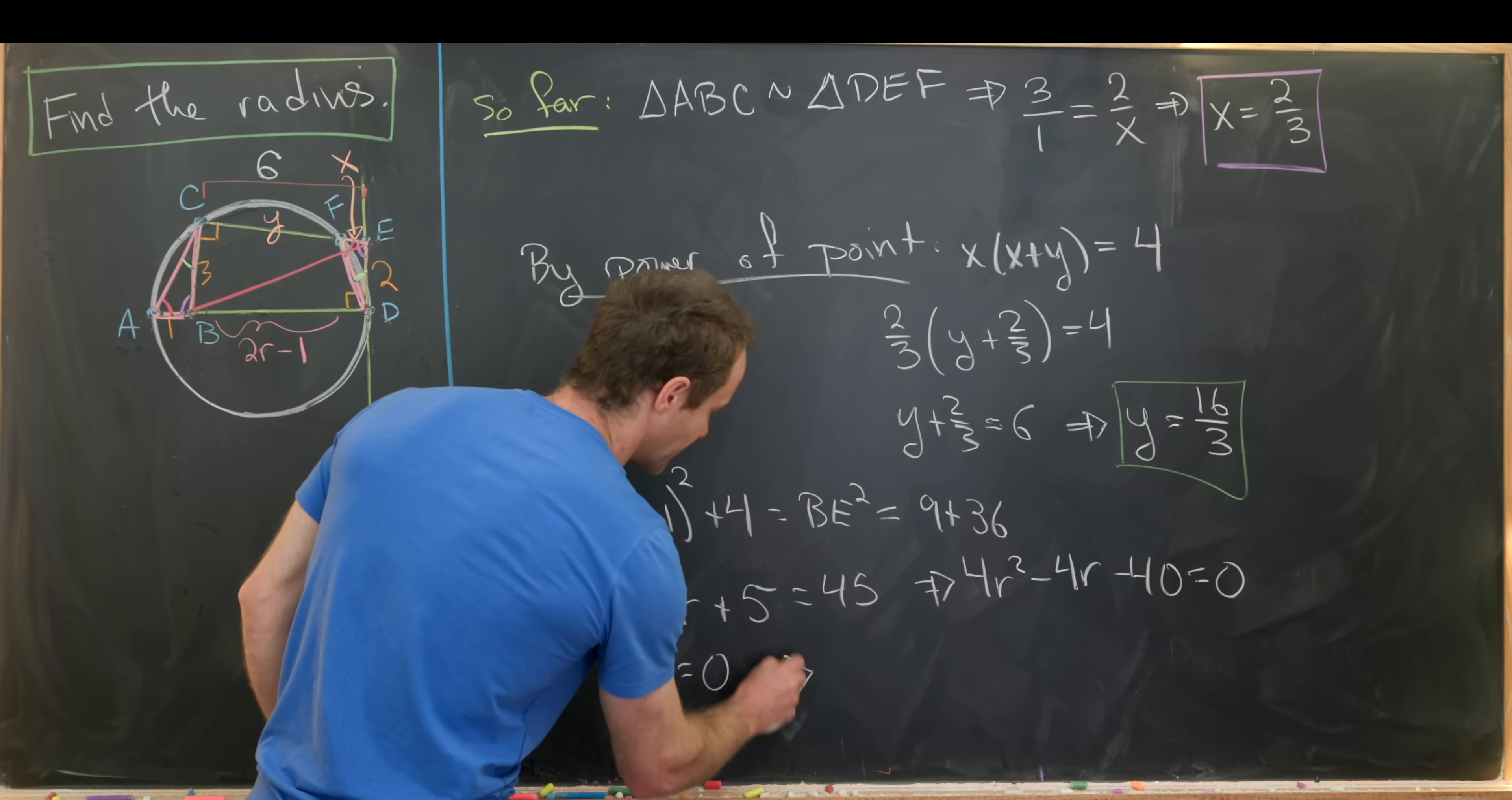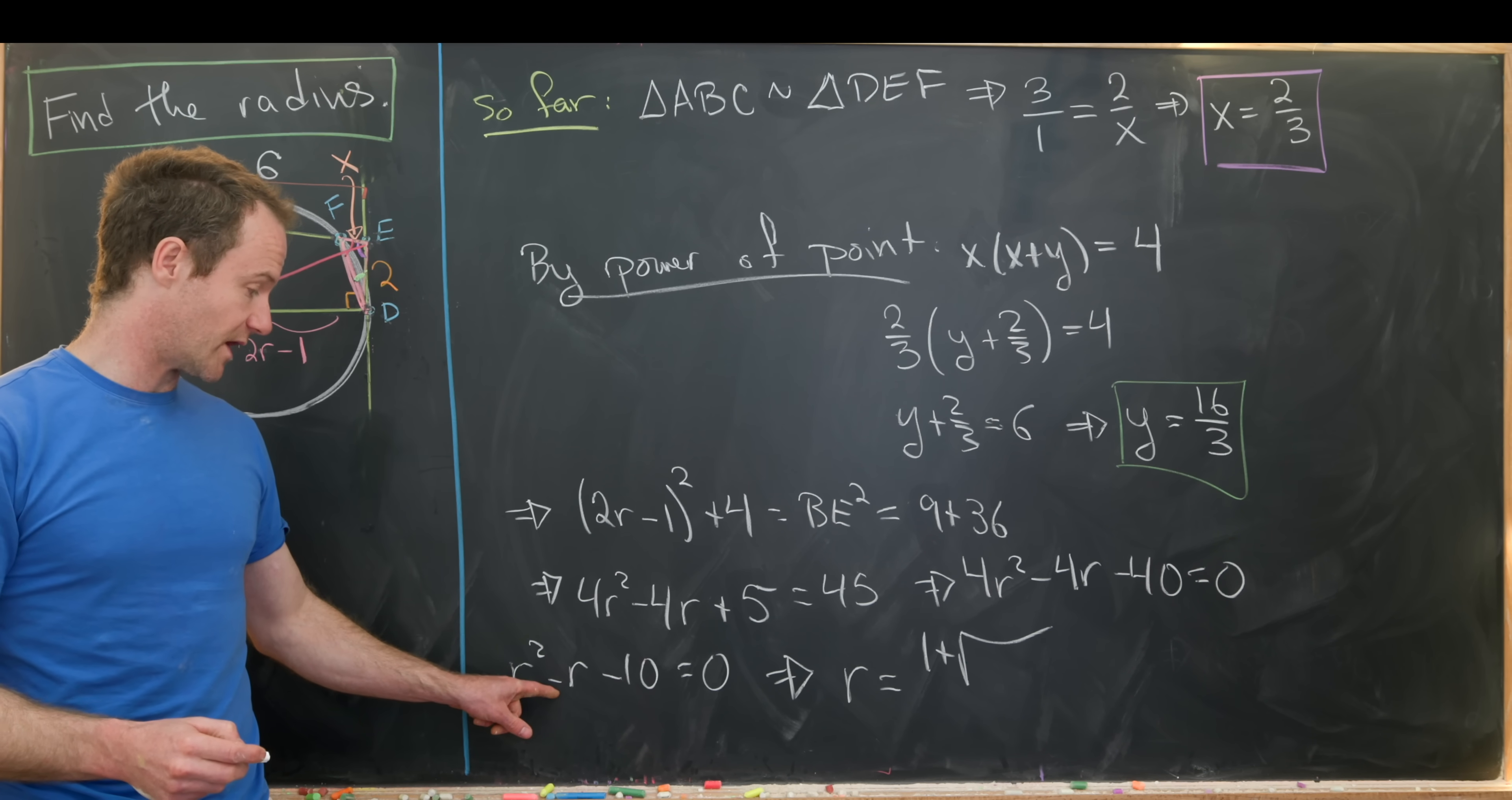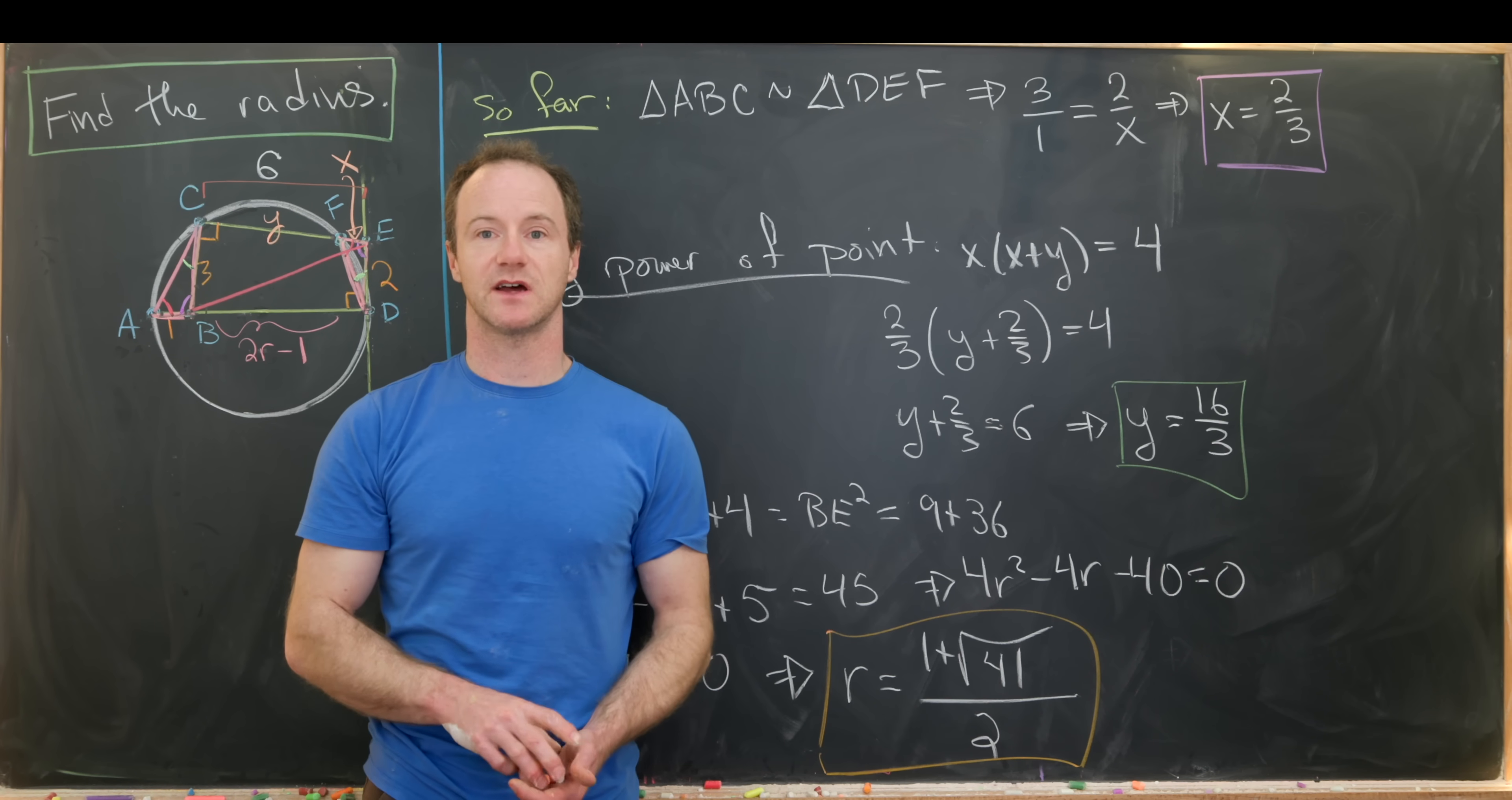And then from there, we can apply the quadratic formula. So that'll give us R equals, so negative B, that'll be 1, plus or minus, but we're just going to use the plus because the minus will give us something less than 0, and that doesn't make sense for a radius. Then we have B squared, so B squared is 1 squared minus 4AC, so that'll be 41 all over 2. And that's it. That's the final value for the radius of this circle. And that's a good place to stop.